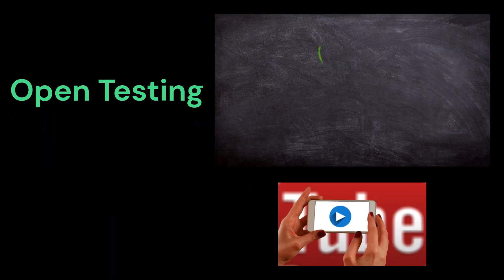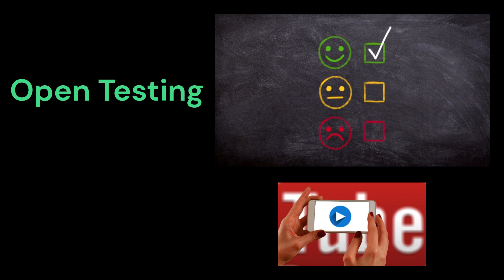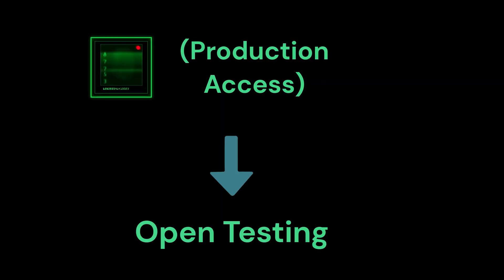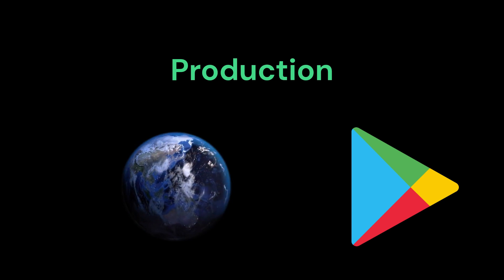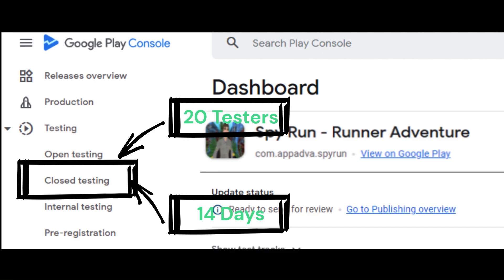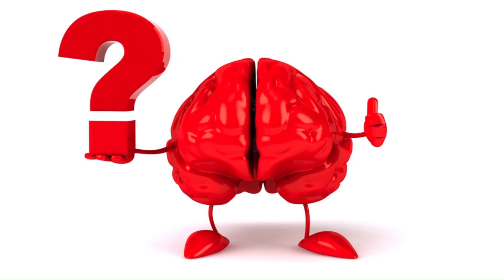Open testing track: the purpose is to surface your app's test version on Google Play. Anyone can join your test and submit private feedback to you. You must have gained access to production to access open testing. Production track: the purpose is to make your app available to billions of users on Google Play. Before you can apply for production access, you must run a closed test with at least 20 opted-in testers for 14 days. Once you've met the criteria, you will then be able to apply for production access by answering some questions about your testing, your app, and its production readiness in Play Console.